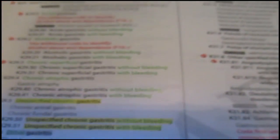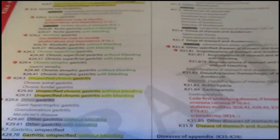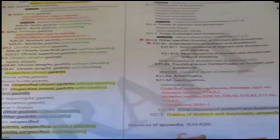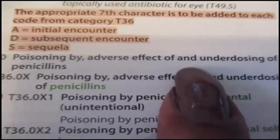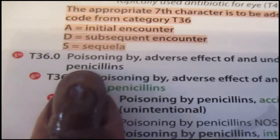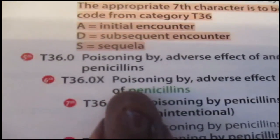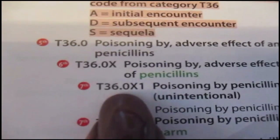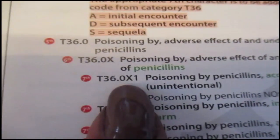There's something called a placeholder in ICD-10-CM. ICD-10-CM uses the letter X as a placeholder — it's a character on certain codes that allows for future expansions. If I go to code T-36, it indicates poisonings by adverse effects of and underdosing of penicillin. It's telling me I need to carry that four-digit code to the fifth digit. The fifth digit is T-36.0X, which tells me to go to the sixth digit: T-36.0X1. See that X in there? That X is a placeholder for future growth of this code, giving greater and greater specificity.